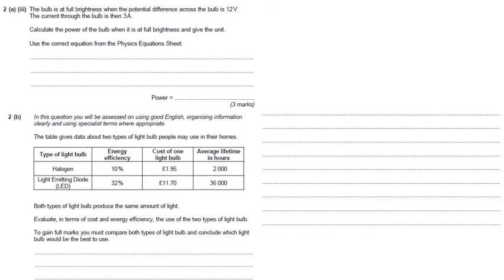2A part 2 asks us to calculate the power of the bulb, and we're given the current and the voltage or potential difference across the bulb. The formula that links these two from the formula sheet is that the power of an electrical component is equal to the potential difference across it times the current through it. So in this case, it's 12 volts times 3 amps, which gives us a power of 36 watts.